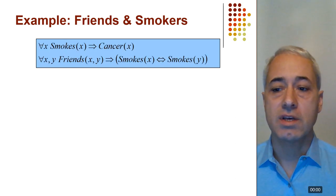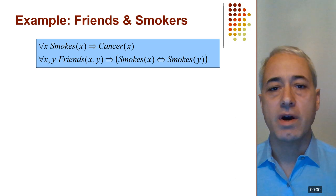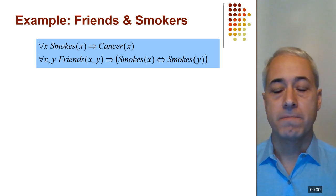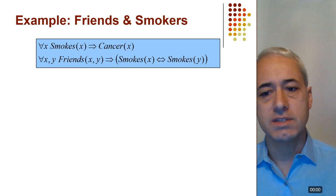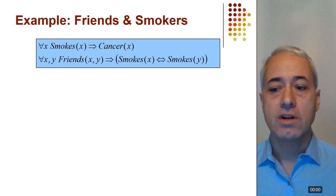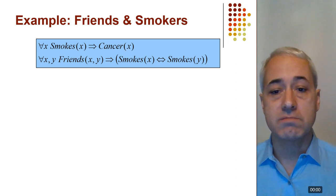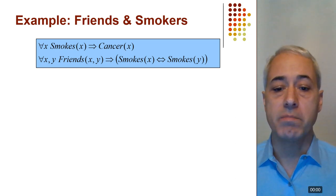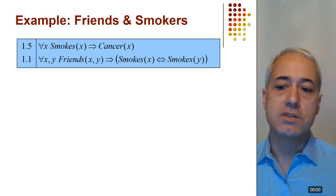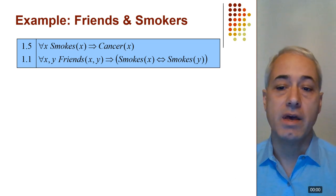We can make two simple statements: smoking causes cancer, and friends have similar smoking habits. In logic: for every X, smokes(X) implies cancer(X); and for every X, Y, friends(X,Y) implies smokes(X) is equivalent to smokes(Y). The problem is these logical statements are actually false, because not everyone who smokes gets cancer and not all pairs of friends have the same smoking habits. We turn them into true and useful statements by assigning weights to the formulas in a Markov logic network, where a higher weight corresponds to a stronger regularity.